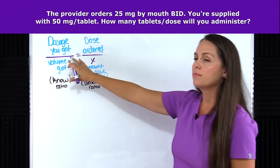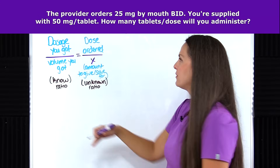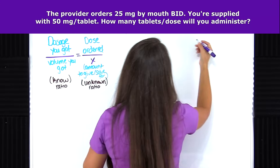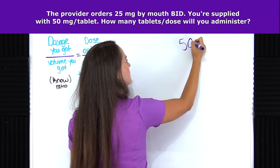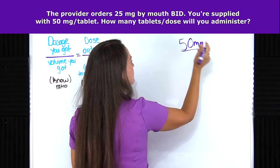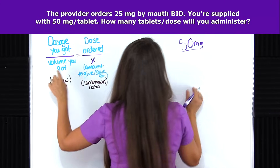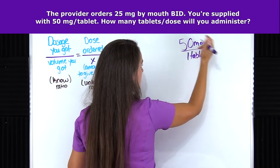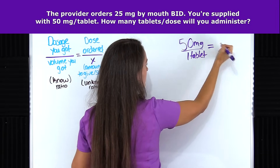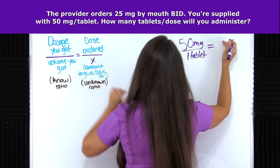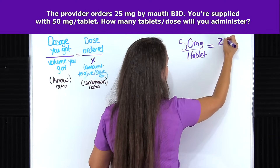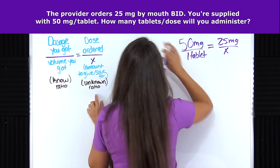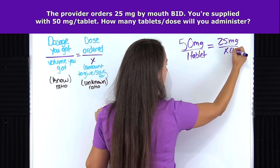Let's first get our known ratio created. The dosage we have on hand is 50 milligrams, and the volume we have on hand is just one tablet. Those two things are equal to the dose ordered, which was 25 milligrams, and we're trying to figure out tablets per dose — so that's our x.